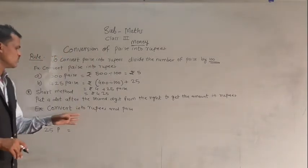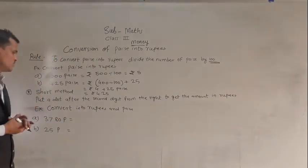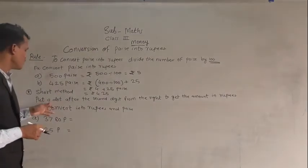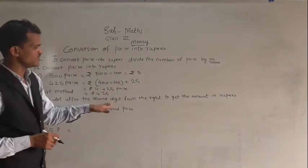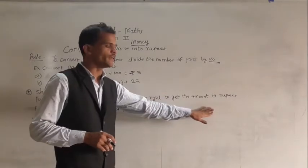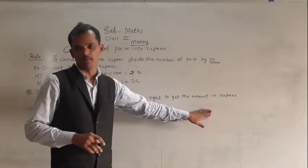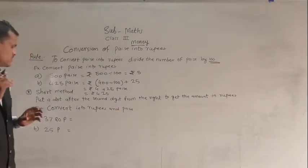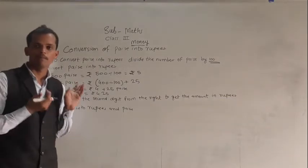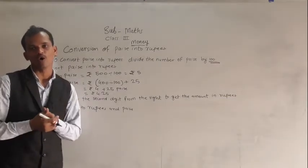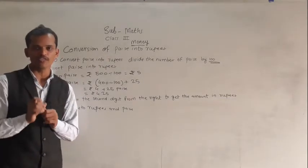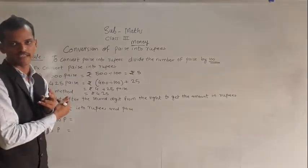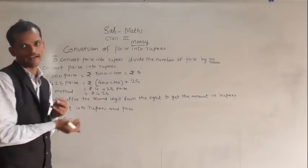There is one simple short method: put a dot after the second digit from the right to get the amount in rupees. If the amount is given in paise and we have to convert it into rupees, put a dot after 2 digits from the right.